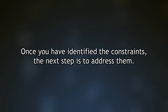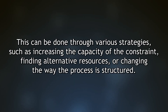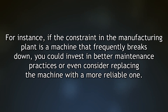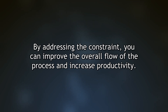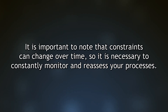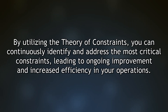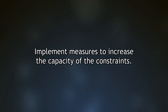Once you have identified the constraints, address them through strategies such as increasing the capacity of the constraint, finding alternative resources, or changing the process structure. For instance, if a machine frequently breaks down, invest in better maintenance or consider replacing it. It is important to note that constraints can change over time, so constantly monitor and reassess your processes. By utilizing the Theory of Constraints, you can continuously identify and address critical constraints, leading to ongoing improvement.